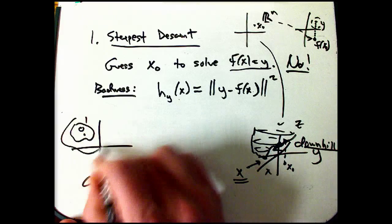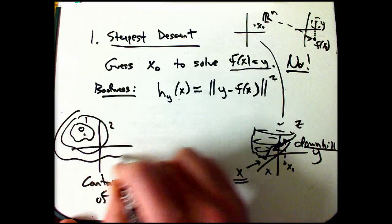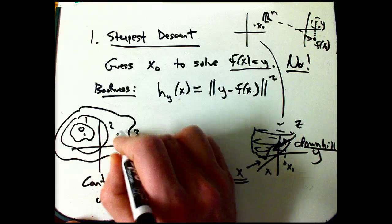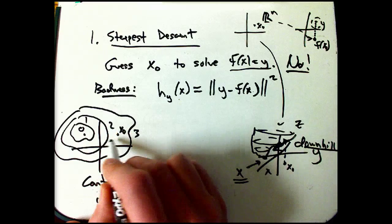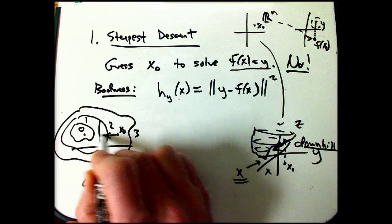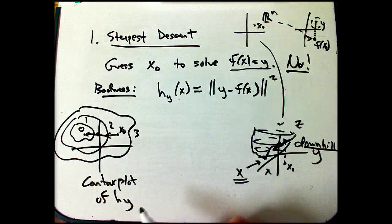And then one, two, three. Hopefully if I'm over here with my guess x naught, if I go downhill, if I go opposite the direction of the gradient, I'll hopefully be led to that solution.